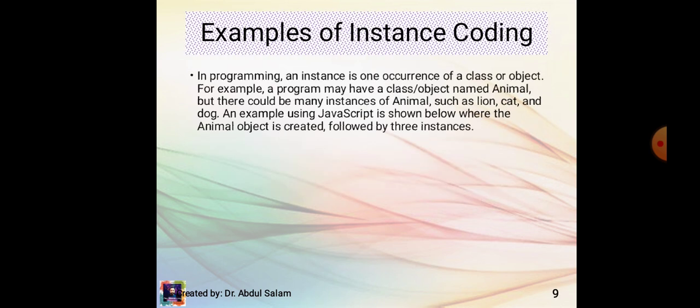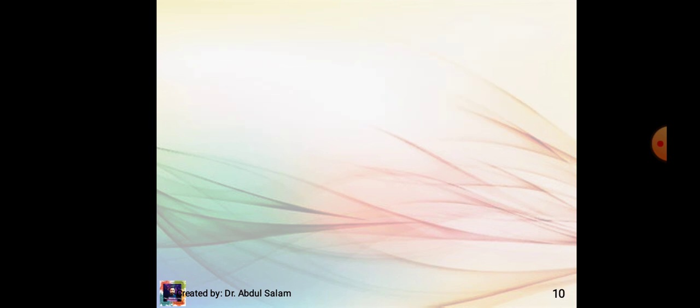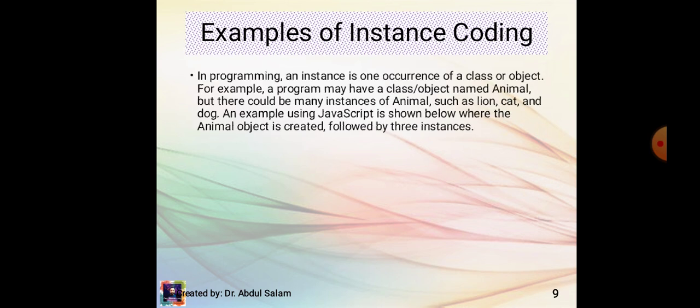Examples of instance coding: in programming, an instance is one occurrence of a class or object. For example, a program may have a class or object named Animal, but there could be many instances of animals such as lion, cat, and dog. An example using JavaScript is shown below where the Animal object is created followed by three instances.